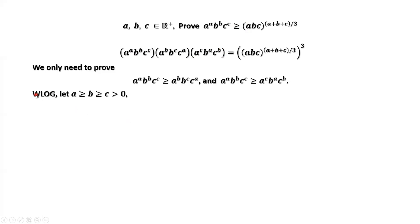Without loss of generality, we assume a ≥ b ≥ c > 0. The condition greater than 0 is already given.